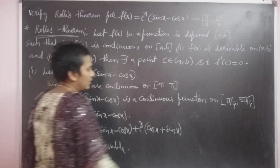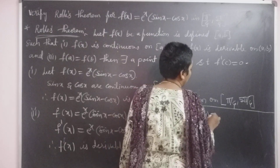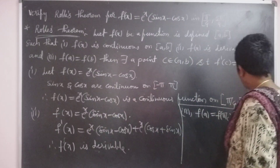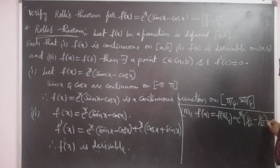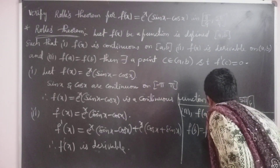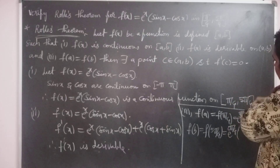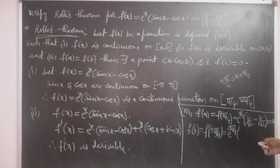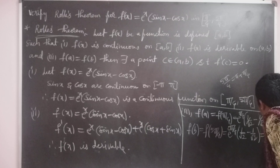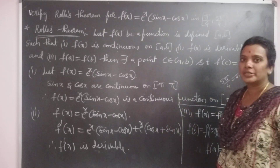Now checking the third condition: f of a equal to f of pi by 4, which equals e power pi by 4 into sin pi by 4 minus cos pi by 4. Since sin pi by 4 is 1 by root 2 and cos pi by 4 is 1 by root 2, the result is 0. And f of b equal to f of 5 pi by 4, which equals e power 5 pi by 4 into sin 5 pi by 4 minus cos 5 pi by 4. Here 5 pi by 4 equals pi plus pi by 4, which is in the third quadrant, giving sin pi by 4 minus cos pi by 4, that is 1 by root 2 minus 1 by root 2, equal to 0. Therefore f of a equal to f of b.